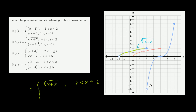Then it jumps down, and this second piece looks like x to the third power. x cubed looks something like this — at negative 2 it's negative 8, and at 2 it's 8. This looks like x to the third shifted over by 4, so I'm guessing this is x minus 4 to the third power. We can verify: when x equals 4, 4 minus 4 to the third is 0. When x is 6, 6 minus 4 is 2 to the third, which is 8. When x is 2, 2 minus 4 is negative 2 to the third, which is indeed negative 8.